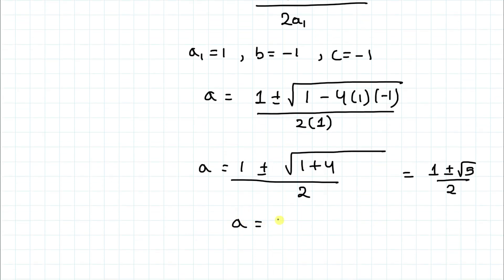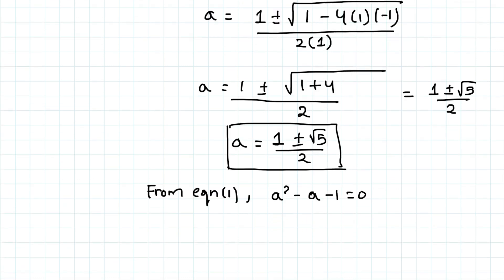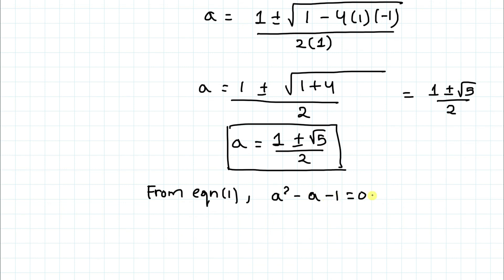So we get a = (1 ± √5) / 2. Now from equation 1, a² - a - 1 = 0. Bringing the terms to the right-hand side, we can write a² = a + 1. Let's call this equation 2.